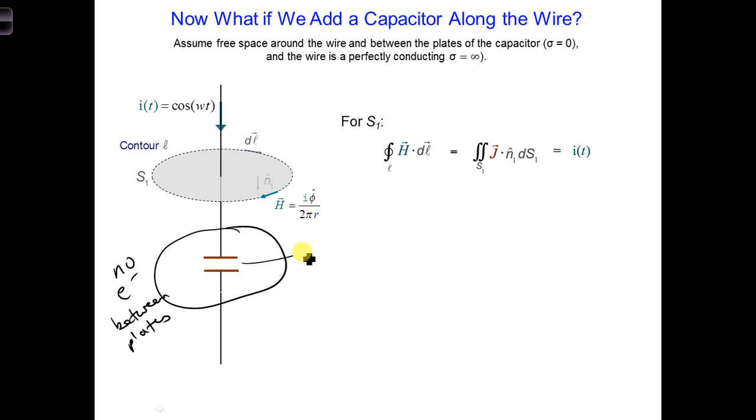That's assuming that we have free space around the wire and between the two plates of the capacitor. So in this region, between the two plates, J is zero.